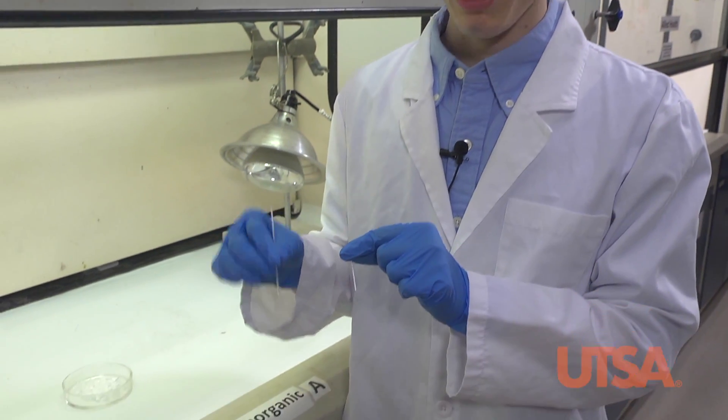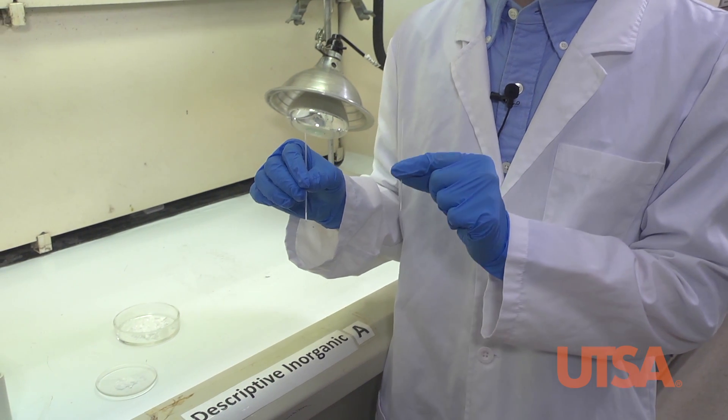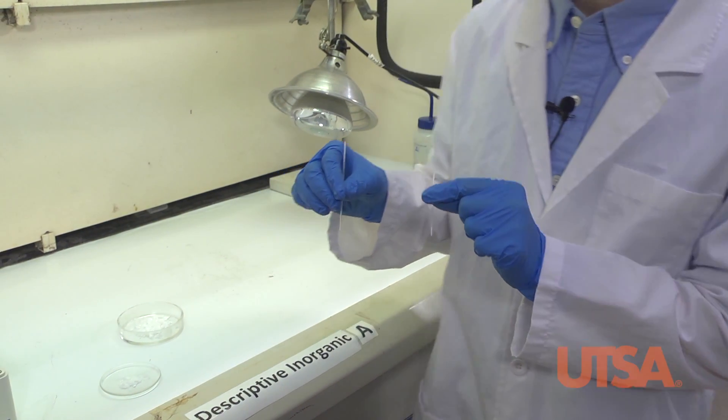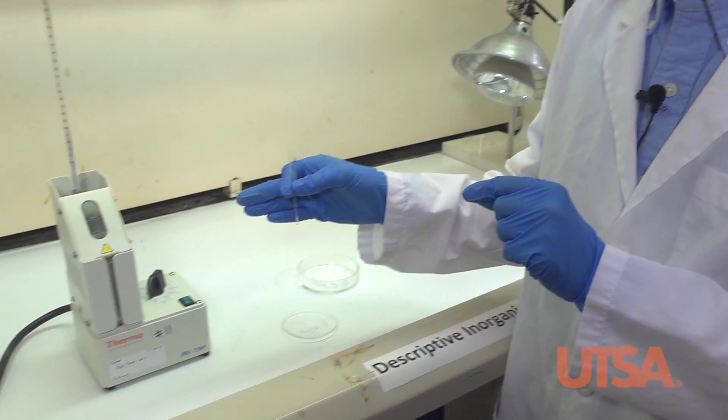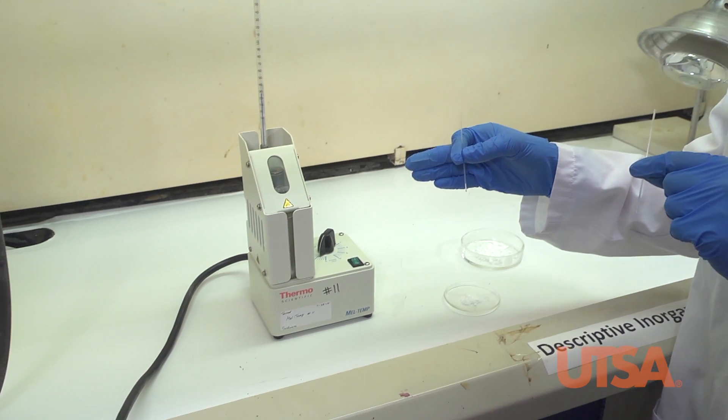With two melting point capillary tubes, we will obtain both the neutral organic and the carboxylic acid. We will use the Meltemp apparatus to determine the melting points.